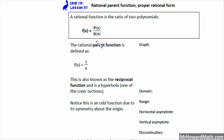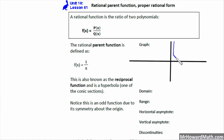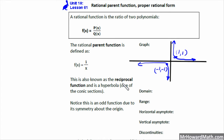In the last unit we discussed polynomials. The rational parent function — the main rational function we start with — is F of X equals 1 divided by X. If we sketch a graph of that, it's in the first quadrant and also in the third quadrant. It has the point (1, 1) and the point (-1, -1) as anchor points. It has a vertical asymptote and a horizontal asymptote, so it is a discontinuous function. This is also known as the reciprocal function and is a hyperbola, which is one of the conic sections.